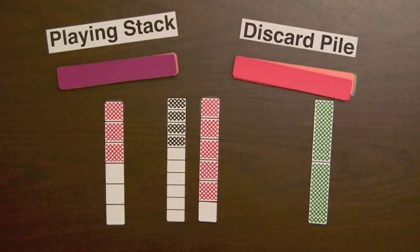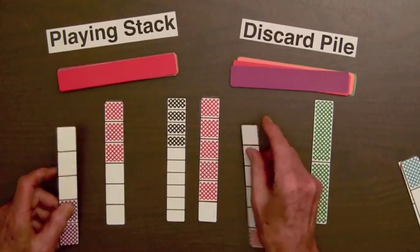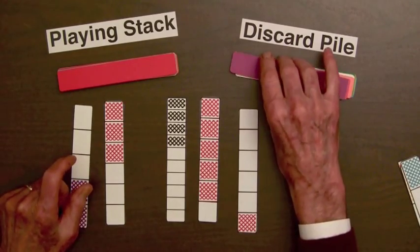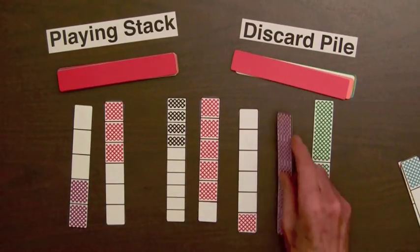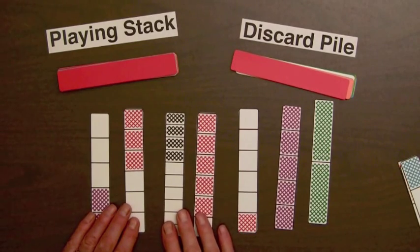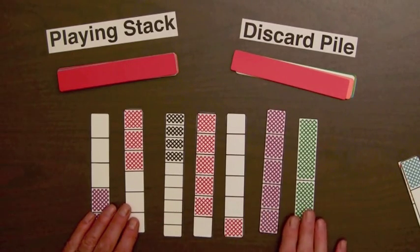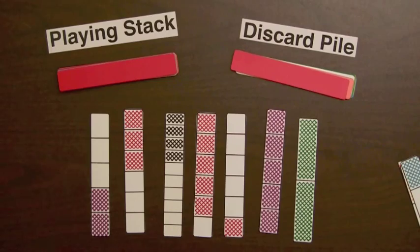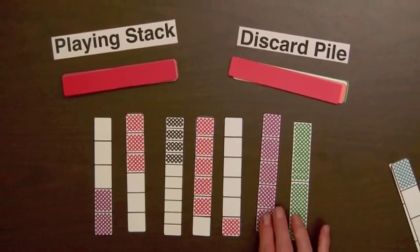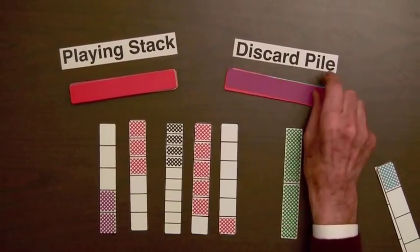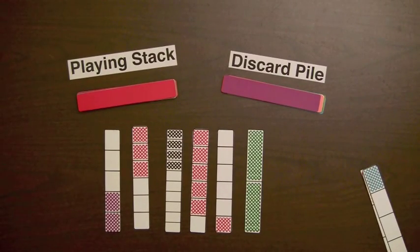So I win those bars and I can take three more. I can take them from either the discard stack or the playing stack. So I have seven and I can continue my turn. Now, at the end of a turn, each player discards one bar to the discard pile. And if they were to make another hole, they would continue their turn.